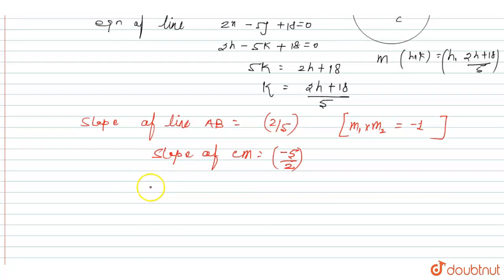Slope of CM can be written as difference of y coordinate upon difference of x coordinate. The difference of y coordinate is 2h plus 18 by 5 plus 1 upon h minus 3 equals minus 5 by 2. When we solve, then we can write 2h plus 18 plus 5 upon 5h minus 15 equals minus 5 by 2.